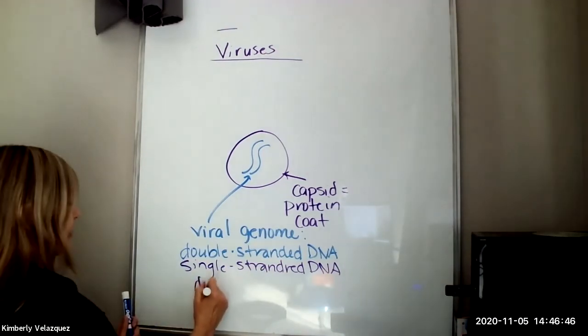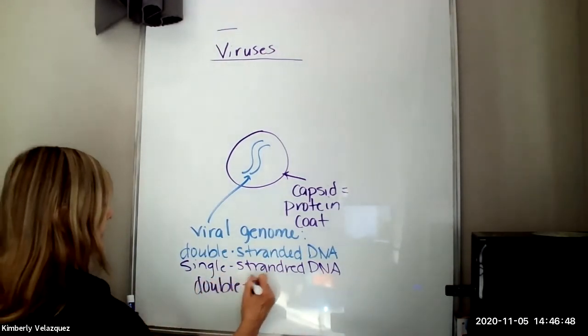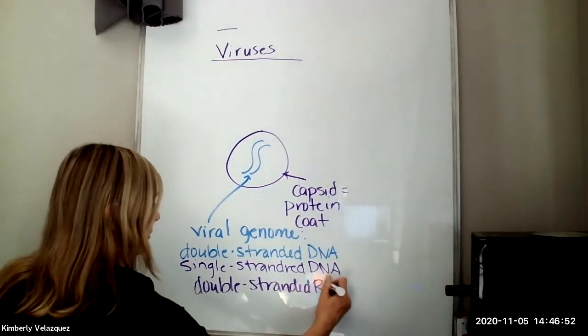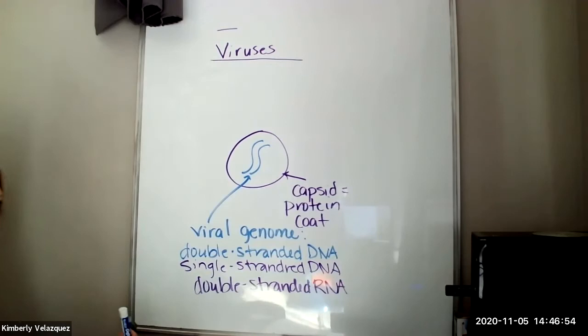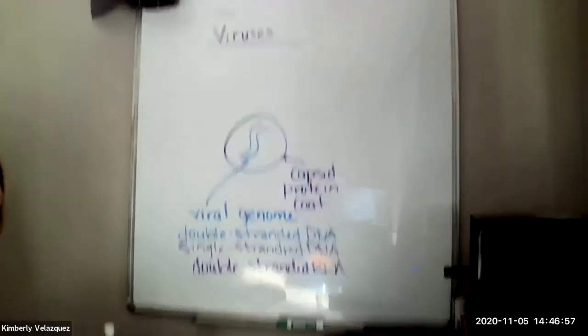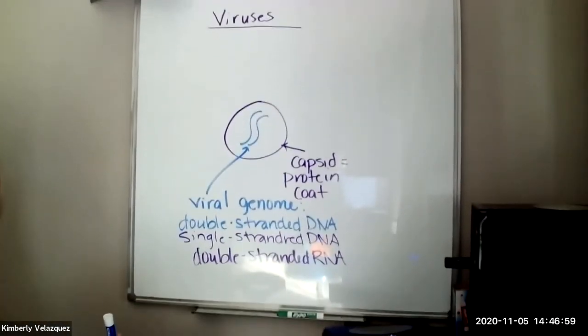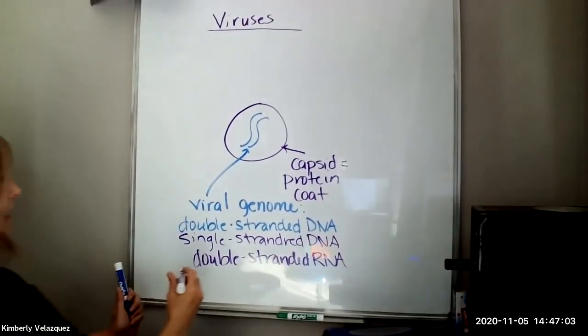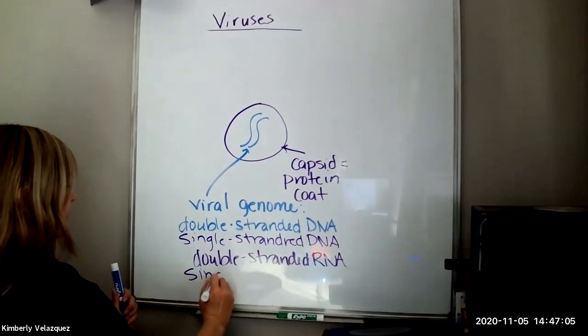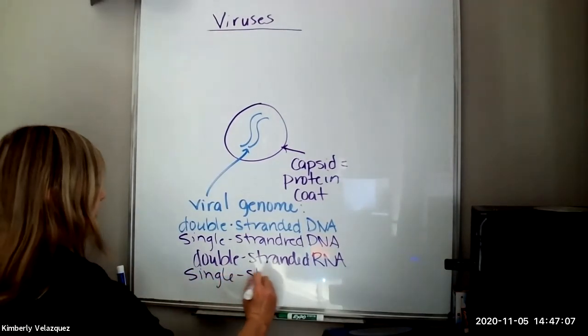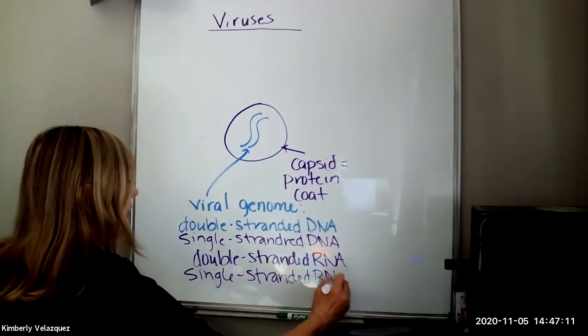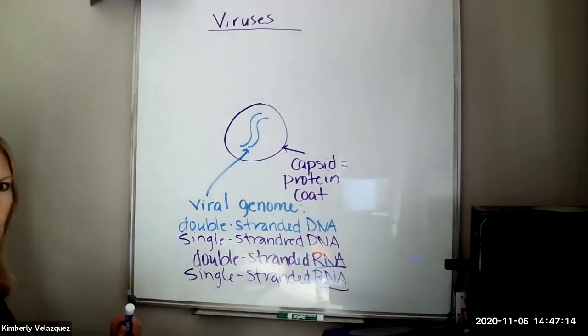It can be double-stranded RNA. Double-stranded RNA does not exist in any living organism. Plus, living organisms don't have RNA as their genome. Sorry about the glare on the board right now. They can also have single-stranded RNA. Single-stranded RNA is the normal form of RNA, but no living organism has RNA as a genome.